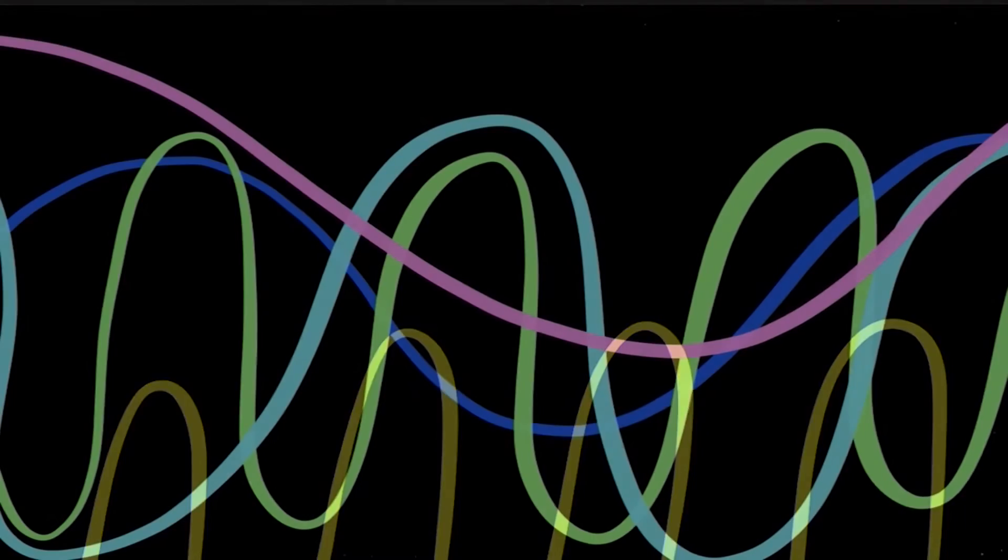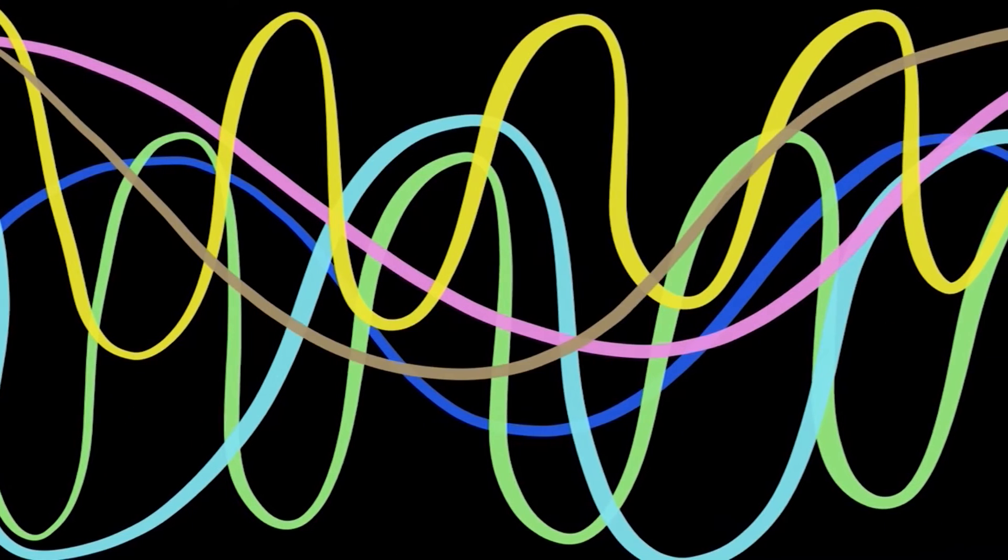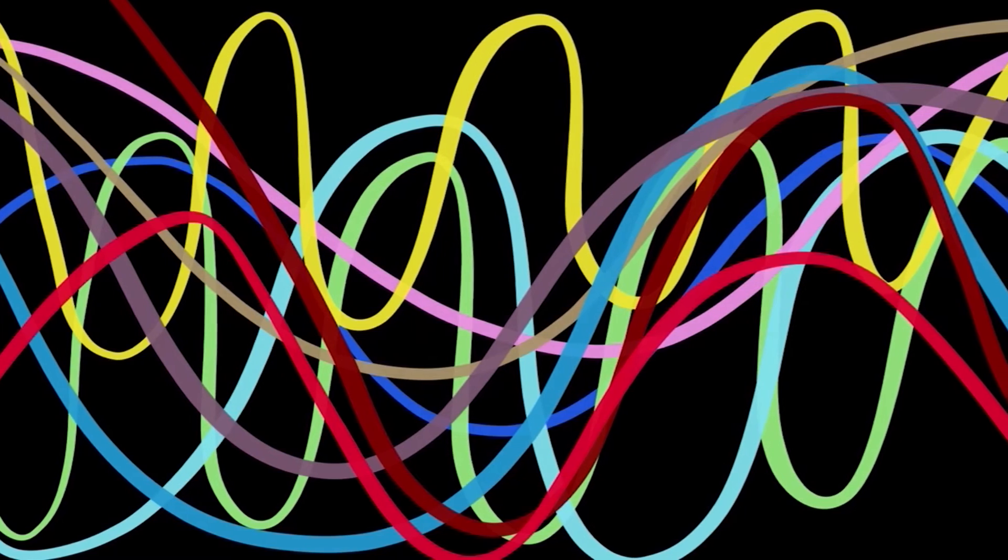How do we image things that are so small? One way is to use waves. How waves scattered from objects tell us about the object's shape and size.